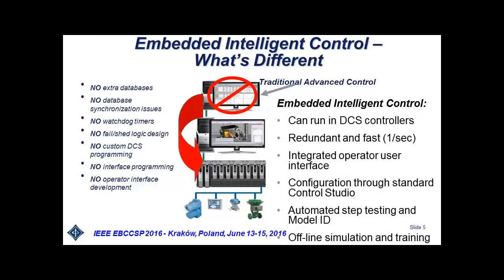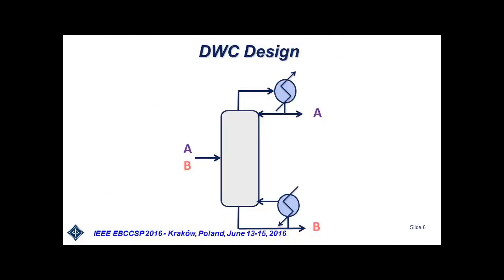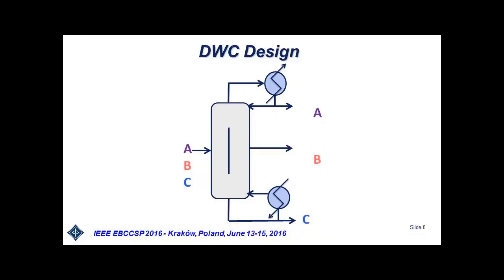There are significant advantages of that solution. The object of our application is the so-called divided wall column. In a normal binary column we have two components to separate — component A and B. A divided wall column is efficient when we have three components. Using binary columns we would need to proceed serially: first column, then separate the third component using a second column. The divided wall column does it in one column.